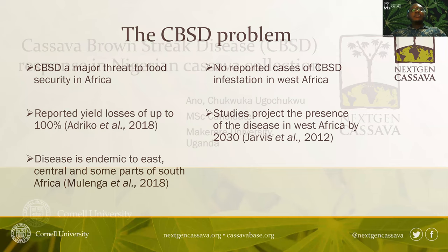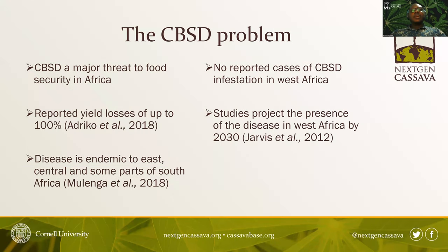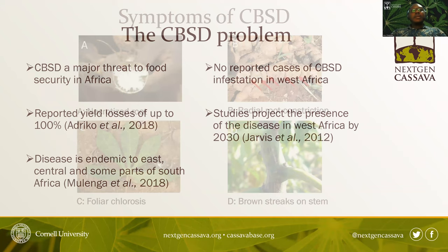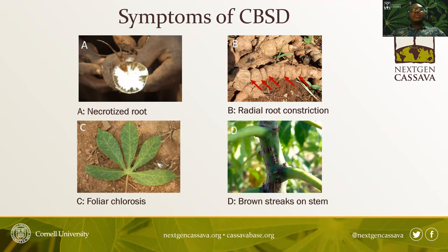Cassava brown streak disease is a major threat to food security in Africa. Yield losses of up to 100% are reported in susceptible varieties. This disease is endemic to East, Central, and some parts of South Africa. It necroses roots and causes radial constrictions on the roots, thereby reducing their marketability. It also causes chlorosis on the leaves and brown streaks on the stem.